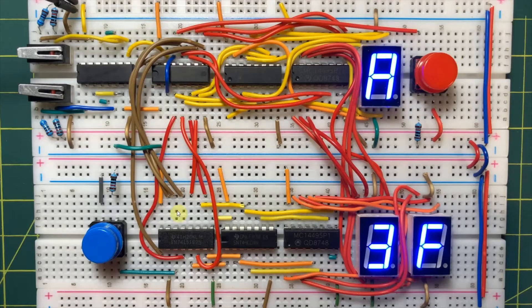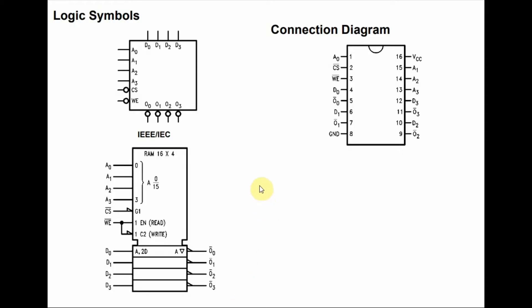The pin diagram of the 74189 is shown here. This side represents the input pins and this side represents the output pins. Starting with the input pins, we have the address lines A0 to A3 which interface with the address bus of a microcomputer system. Through these lines we can access any one of the 16 locations within the chip.